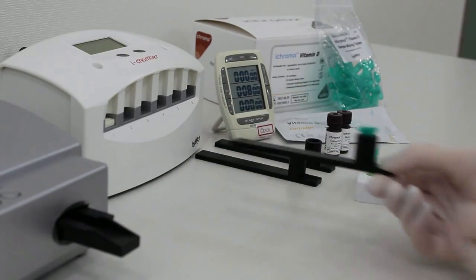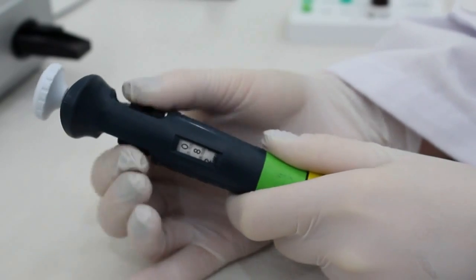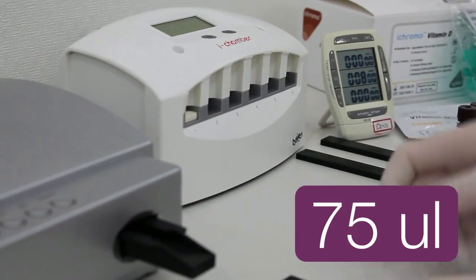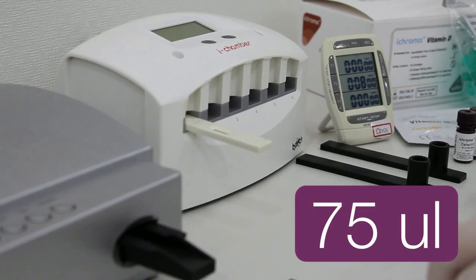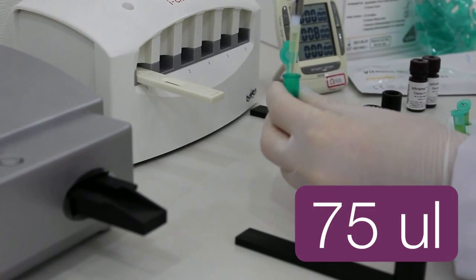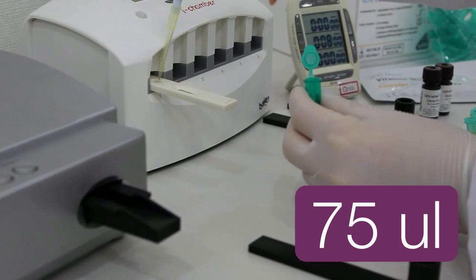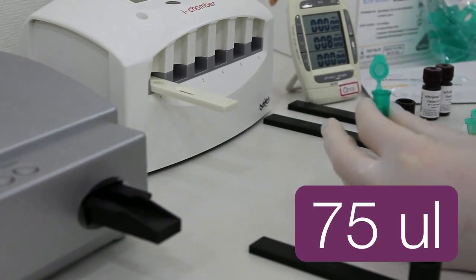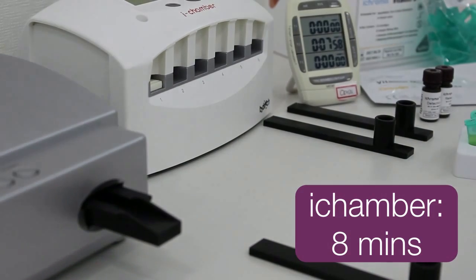After 15 minutes, pull out half of the test cartridge from the iChamber. Pipette out 75 microliters from the whole mixture, dispense it into the sample well on the test cartridge, and insert the test cartridge fully. Leave the sample loaded test cartridge at 35 degrees Celsius for 8 minutes.